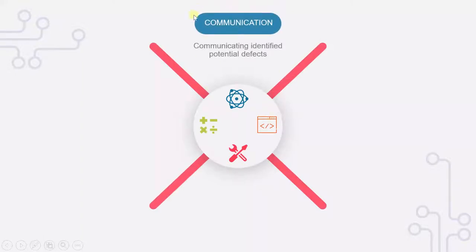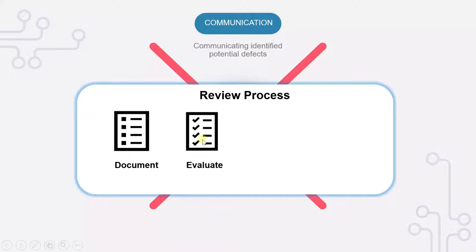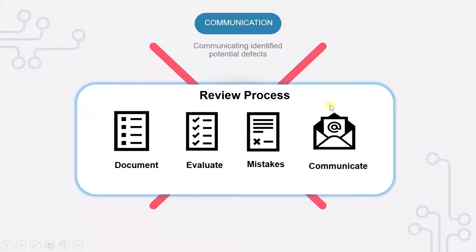The first thing is the reviewer has to communicate what defects he has found — communicating identified potential defects. The process was: he got the document, started evaluating it, and after evaluation he found certain mistakes. In this meeting he is communicating all those mistakes to the stakeholders.